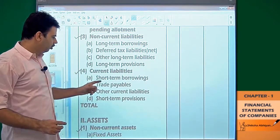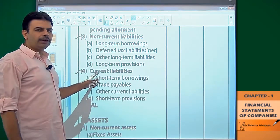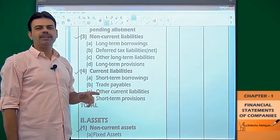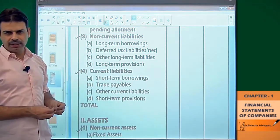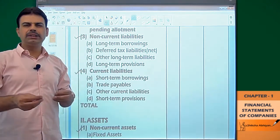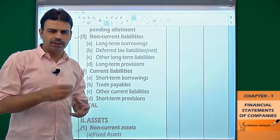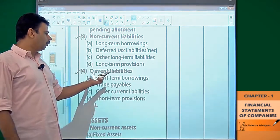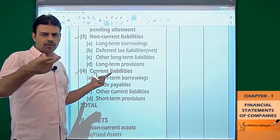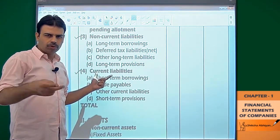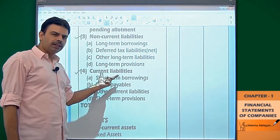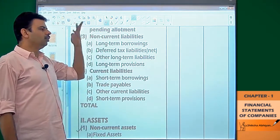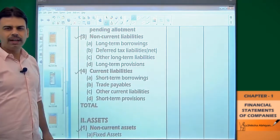Going forward, I will explain three, four, or five conditions — as many as I feel are necessary for you. If any one of those conditions is fulfilled — first, second, third, fourth, or fifth — then those are current liabilities. But if none of those conditions are fulfilled, then they are non-current liabilities.